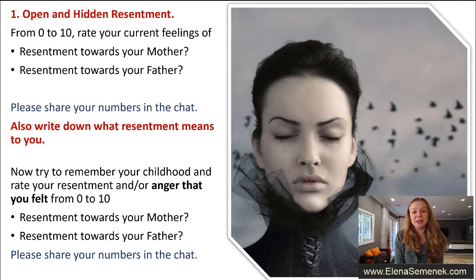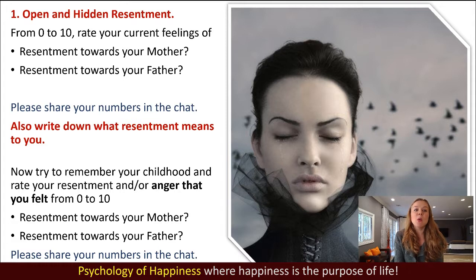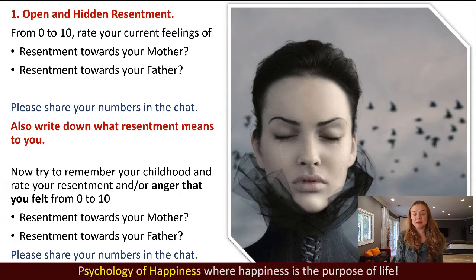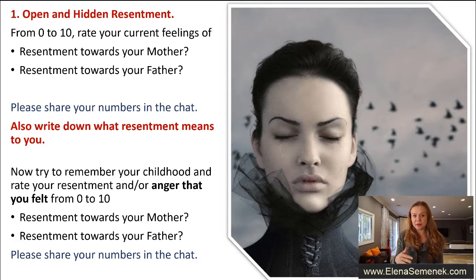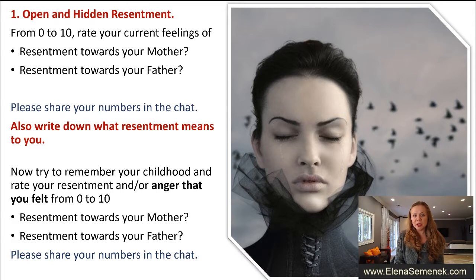Today's topic is anger and resentment towards parents. Let's talk about open and hidden resentment. From 0 to 10, rate your current feelings — the first number will be resentment towards your mother and the second number will be resentment towards your father. If you're watching later, write those numbers down because we will get back to them. Also, please write down what resentment means to you.